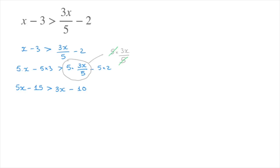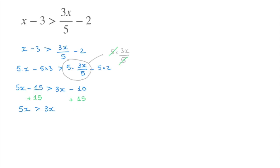To solve it, I'm going to start by gathering all the terms without an x on the right-hand side. Looking at the left-hand side, 15 is being subtracted, so to get rid of it I will add 15 to both sides. So we have 5x minus 15 plus 15, which is just 5x, greater than 3x minus 10 plus 15, so that's plus 5.